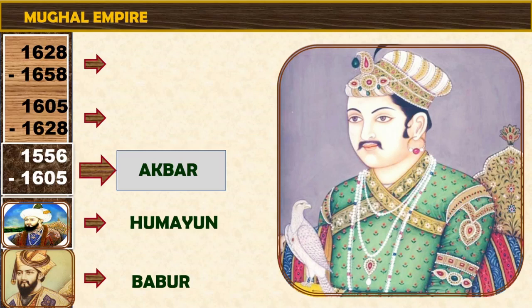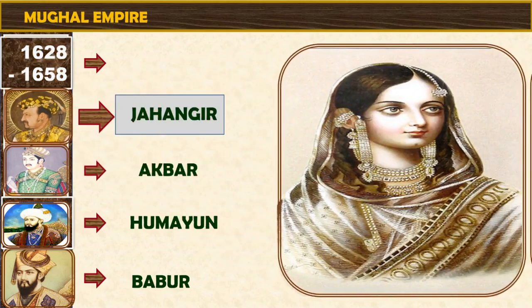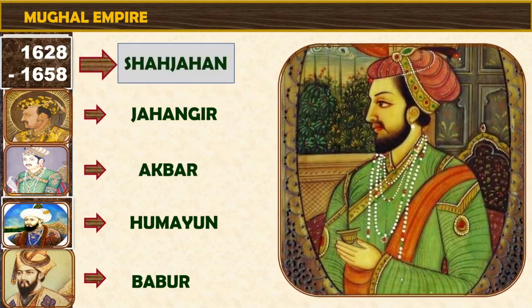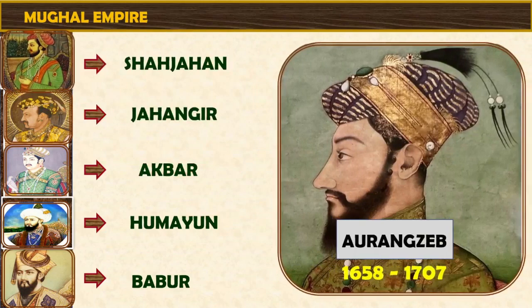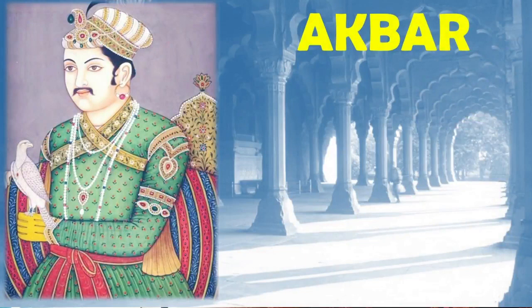Akbar's ambition was to bring the whole of India under one central authority. After Akbar, Jahangir, from 1605 CE to 1628 CE, became the emperor. During his reign, his wife Nur Jahan played an active role in the administration. Jahangir was followed by Shahjahan, from 1628 CE to 1658 CE, as the emperor. The next emperor after Shahjahan was Aurangzeb, who reigned from 1658 CE to 1707 CE for a very long time. After his death, the Mughal Empire became weak.